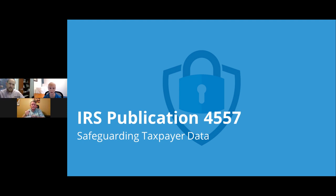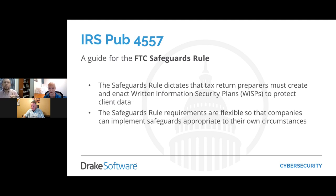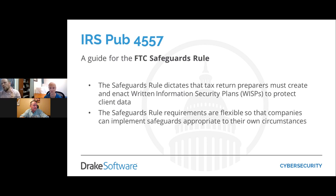Publication 4557 bridges the gap — it translates FTC safeguarding requirements into practical guidance for a tax office. It covers how to implement a firewall, antivirus, and best email hygiene practices, and includes a checklist you can run through each year: yes, I have locks on my doors; I have antivirus; I have trained my employees. It's a concise document that covers the cyber hygiene topics discussed today.